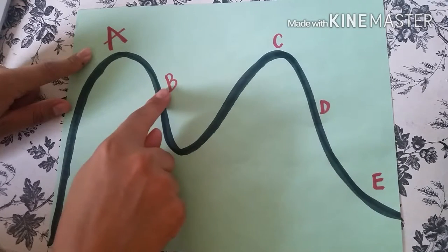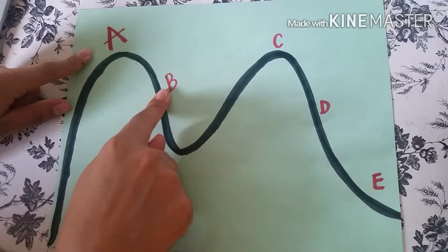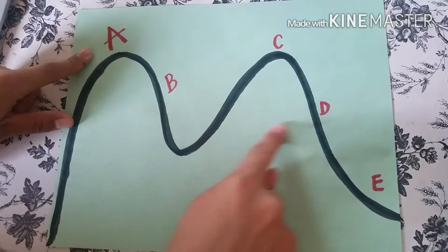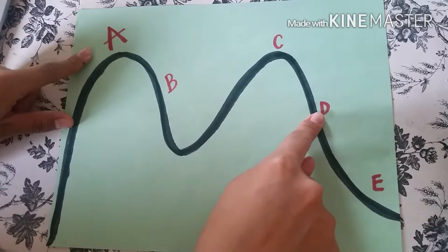Consider location B to be one fourth of the roller coaster path downward. It has three fourths potential energy and has one fourth kinetic energy. Consider that location D to be halfway down the ramp so it has half of potential and half of kinetic energy.